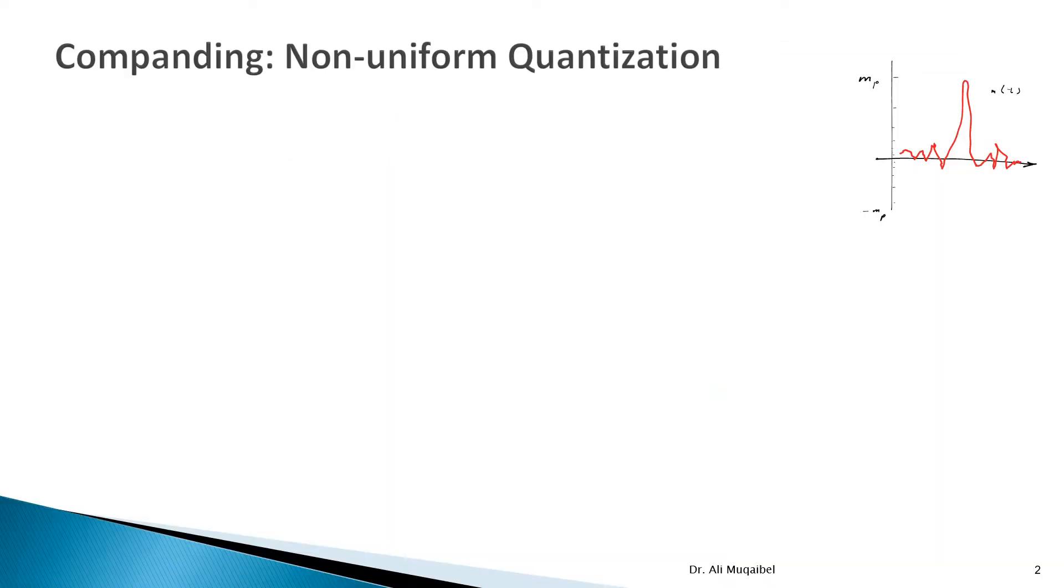Now we address the issue of non-uniform quantization or companding. So far, we have seen uniform quantization where all the y-levels, all the levels on the y-axis, as you can see in the diagram here, are divided uniformly, which means the spacing delta nu, or delta V, is constant, the same value. This is called uniform.